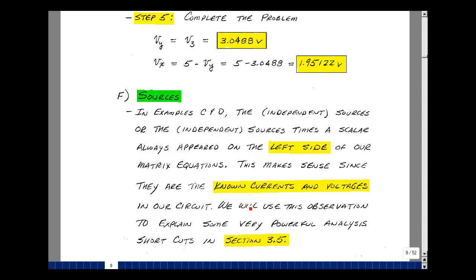That makes sense in the sense that we are solving for unknown voltages and currents, and what's known would be on the left-hand side of the equation if we wrote it as we wrote our matrices. I'm going to use this idea to prove a very powerful analysis technique in Section 3.5. And this is an example of node voltage analysis with a voltage source.